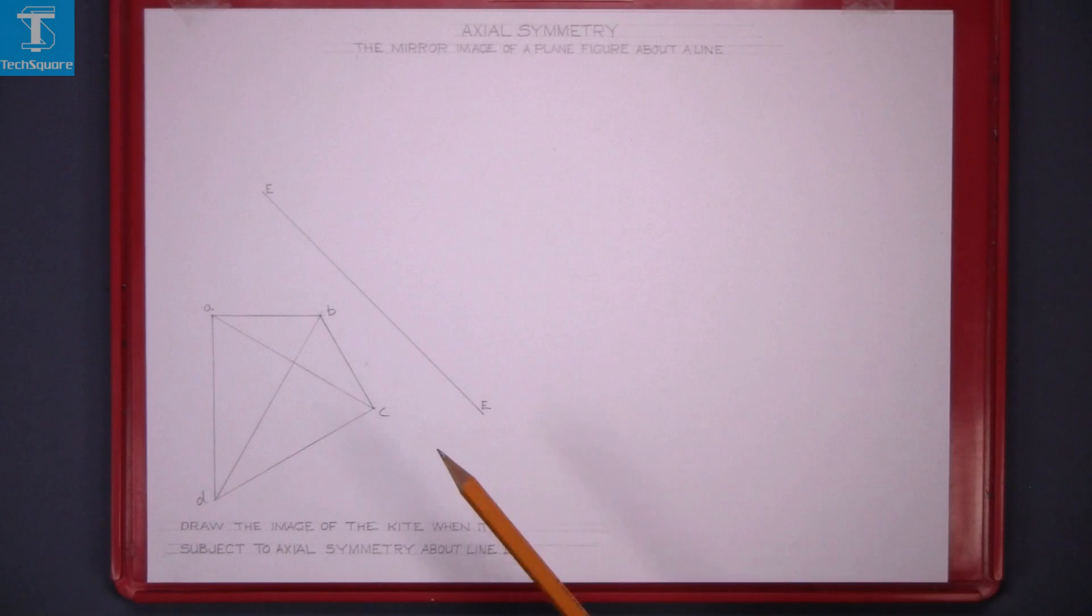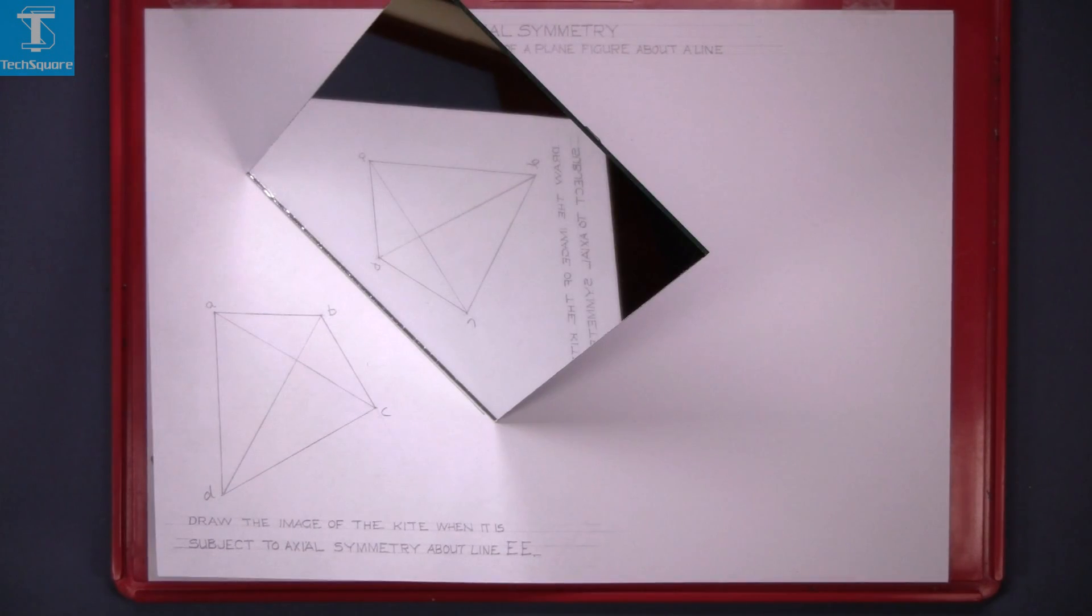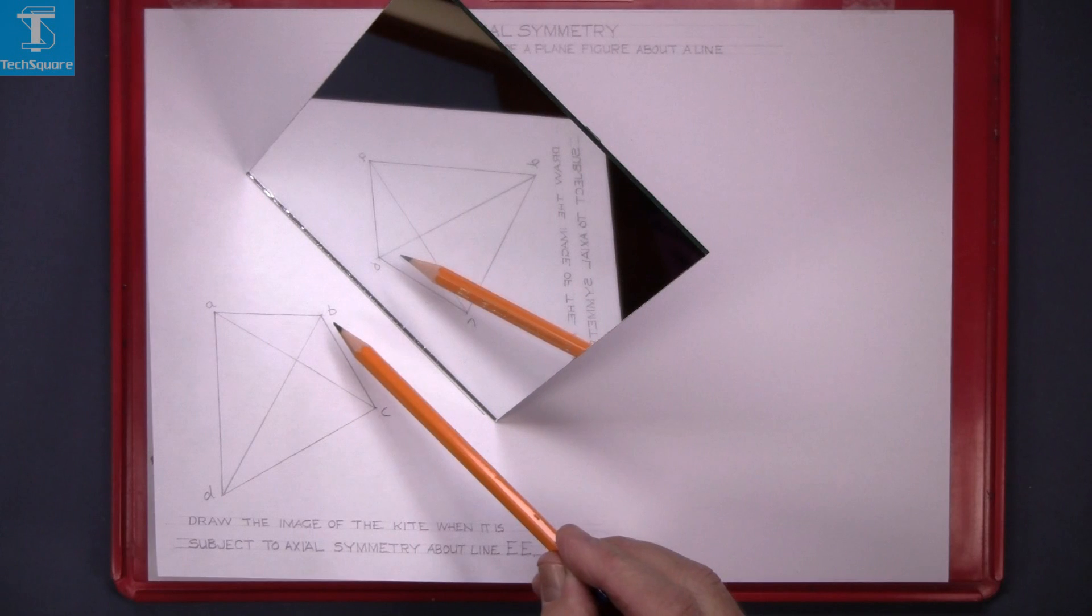So we consider EE a mirror. This is a mirror in place here, just showing you what the image will look like.